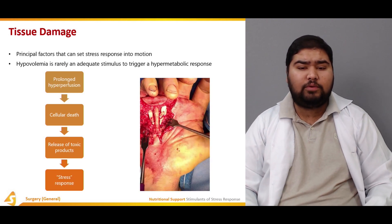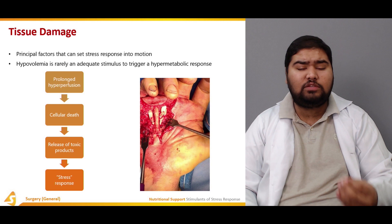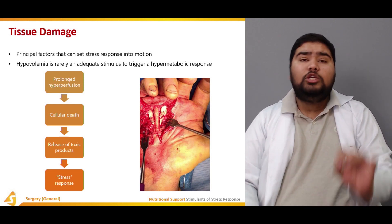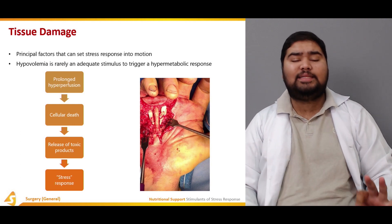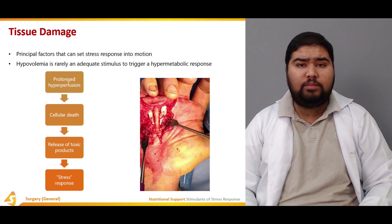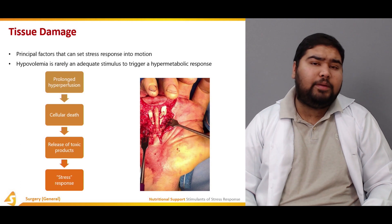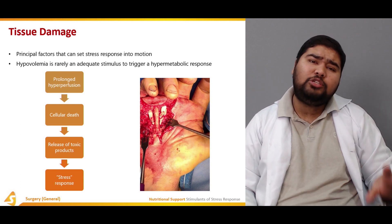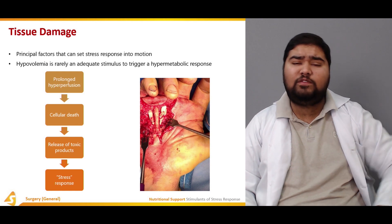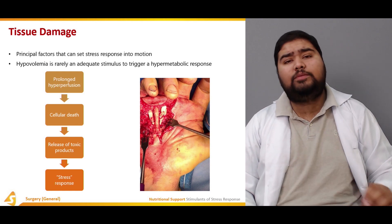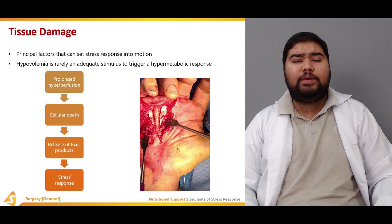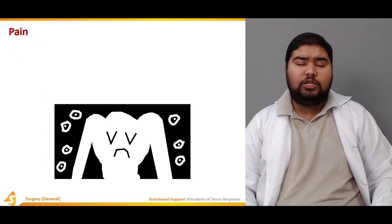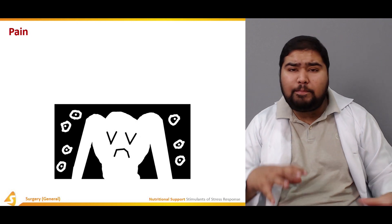If this prolonged hyperperfusion continues, it can lead to cellular death. Cellular death is responsible for the release of toxic products, which produce the stress response. So hypovolemia in itself is not sufficient for the hypermetabolic response — it is the damage to tissues and the production of harmful substances that are responsible for the hypermetabolic or stress response of the body.